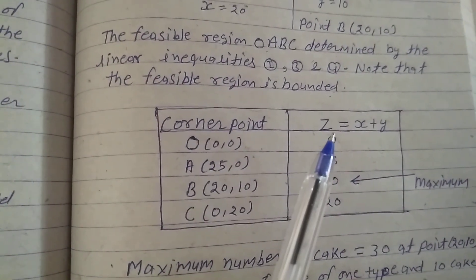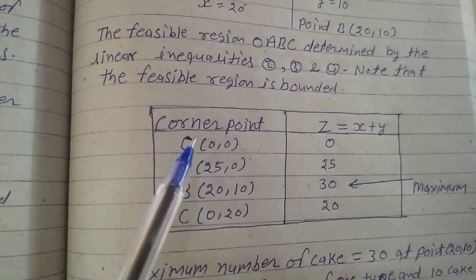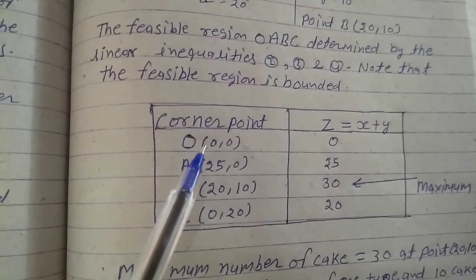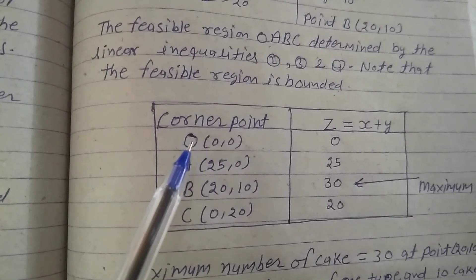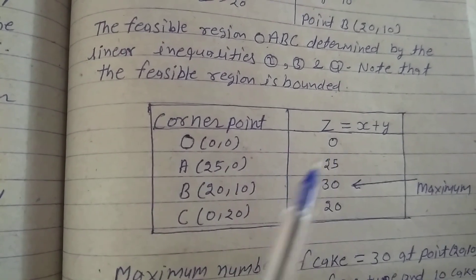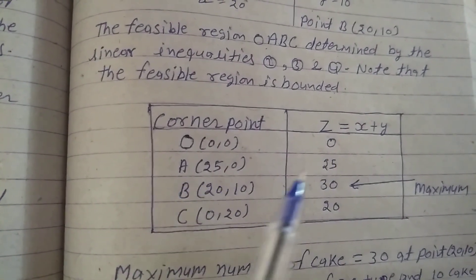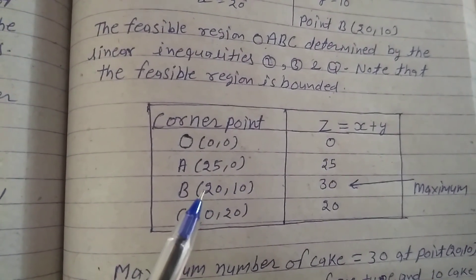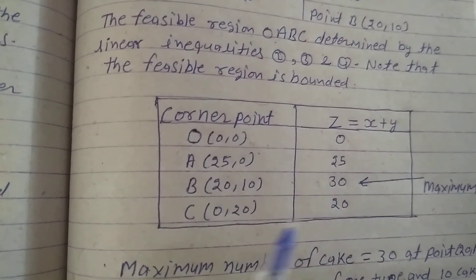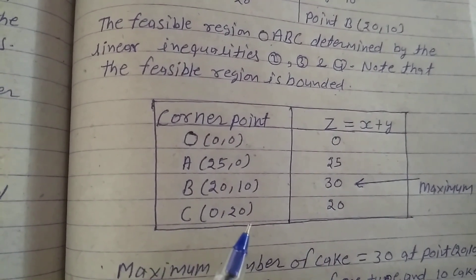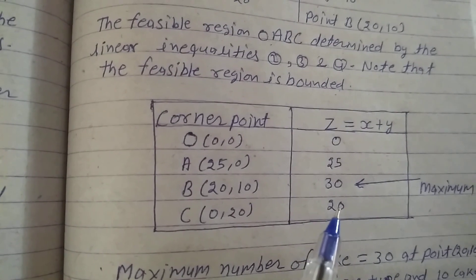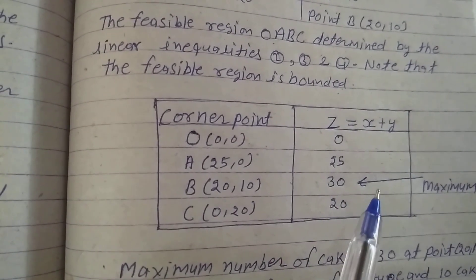Corner point z is equal to x plus y. At corner points, value of z: O(0, 0) is 0, A(25, 0) is 25, B(20, 10) is 30, C(0, 20) is 20. So maximum value is 30.